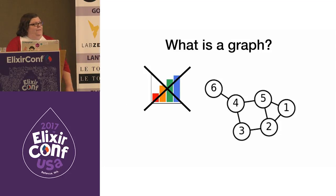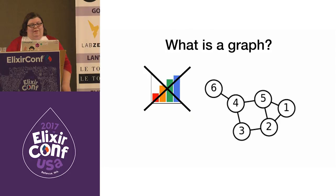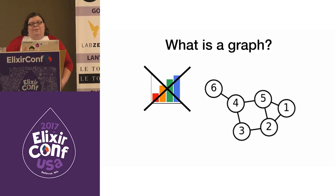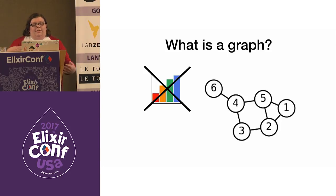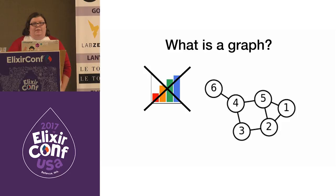So what is a graph? It is not a bar graph or a pie chart. We're talking about graph theory, which you might remember from an algorithms or discrete math class. Broadly speaking, graphs are structures used to model relations between objects, and graph theory is the backbone for how graph databases work.